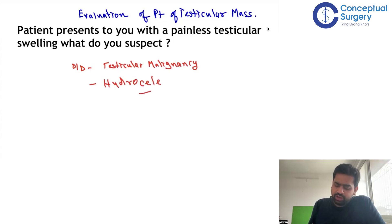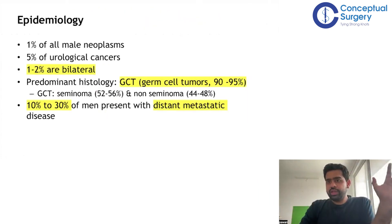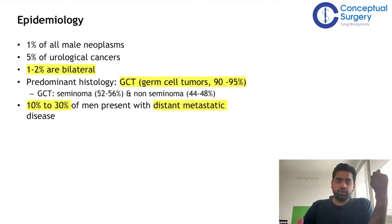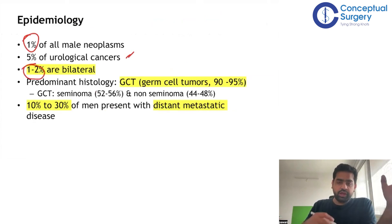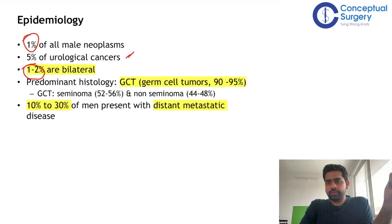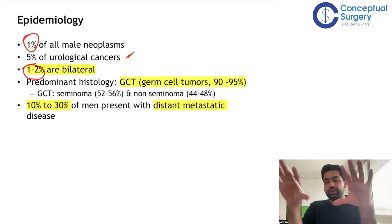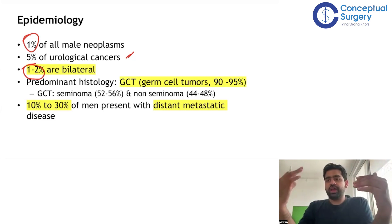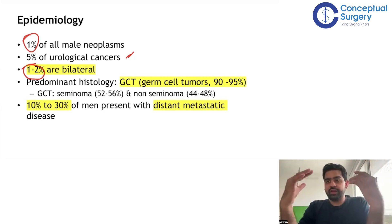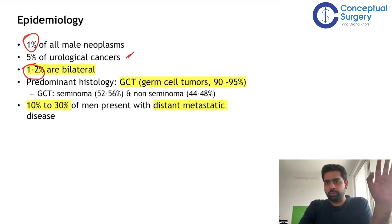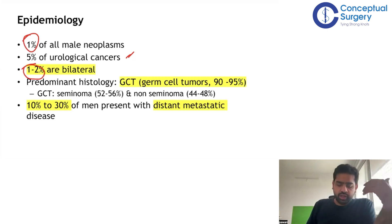Now let's talk about testicular malignancy. Regarding epidemiology: it constitutes around 1% of all male neoplasms. One to two percent of cases are bilateral. Testicular lymphomas in patients older than 60 tend to be bilateral and metachronous — not synchronous, meaning they don't occur within six months of each other. Also, in patients with cryptorchidism, the contralateral testis is also at risk for malignancy, which can result in bilateral malignancy. Most cases are unilateral.